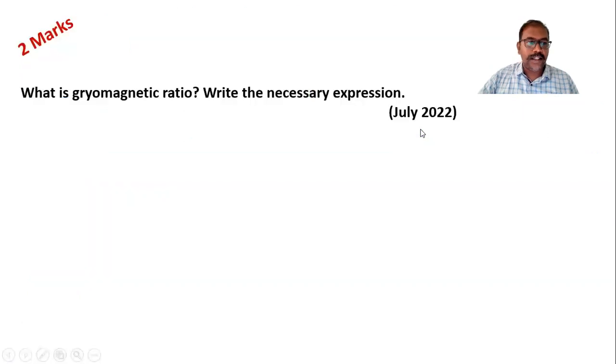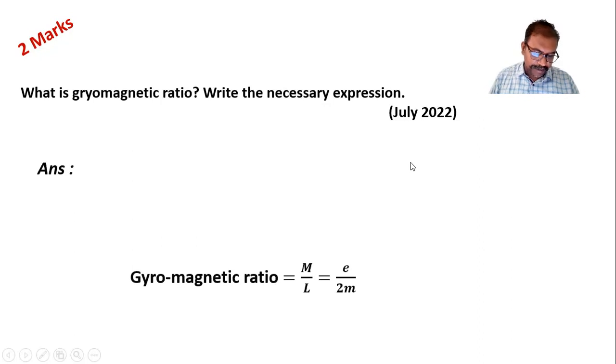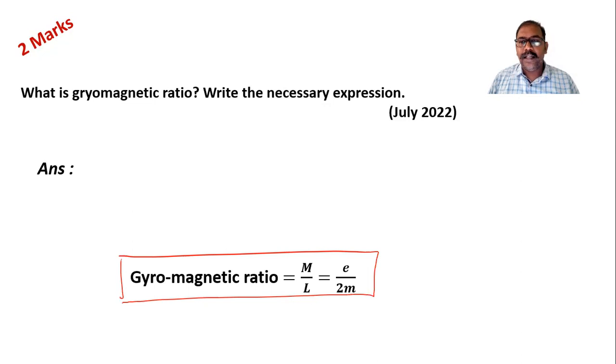Now first thing let's see what is gyromagnetic ratio. So basically gyromagnetic ratio is given by this formula. In this formula the M stands for magnetic dipole moment and L stands for angular momentum of revolving electron.